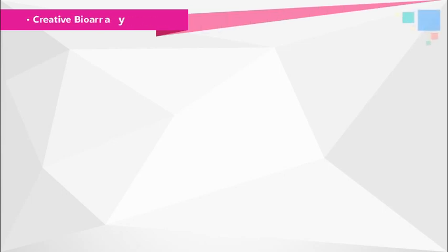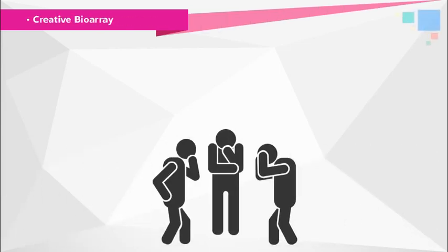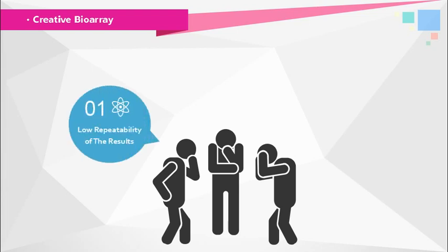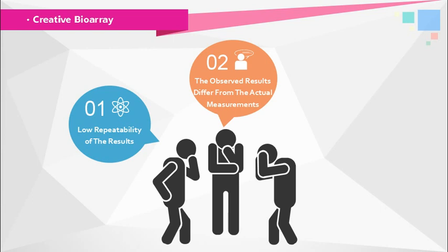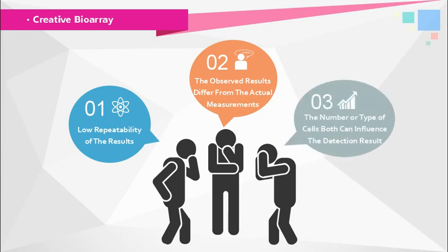Though there are many different methods, the results don't always meet expectations. For example, low repeatability of results, observed results differ from actual measurements, and even the number or type of cells can influence the detection result. So choosing a proper assay method is important, as it determines whether the expected outcome is valid or not.